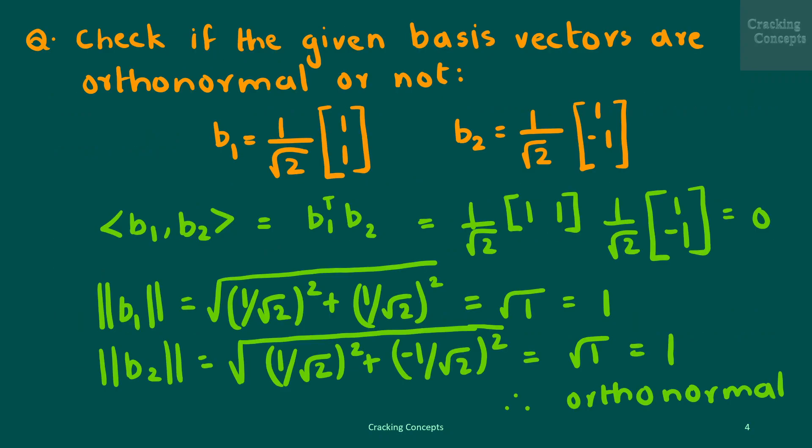We will see a problem where we are asked to check if the given basis vectors are orthonormal or not. The given vectors are b1 and b2. We take the inner product as the dot product of vectors, so the inner product of b1 and b2 is given by b1-transpose b2, and we will see that the result is 0. Next we calculate the norm value for b1 and b2 and see that they are 1. Hence we conclude that both the basis vectors are orthonormal.